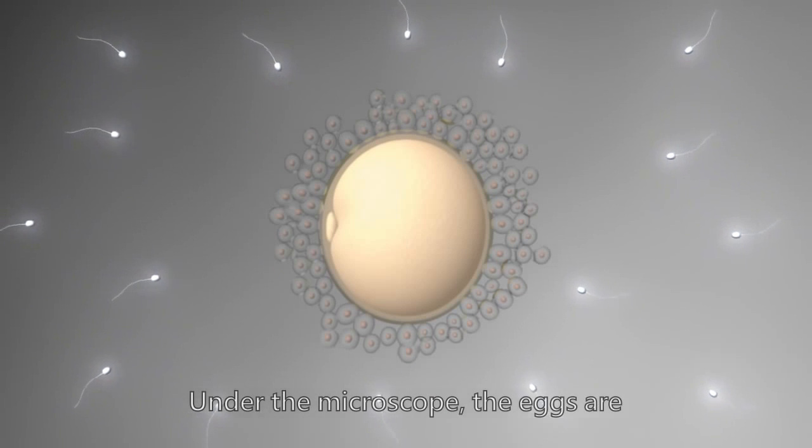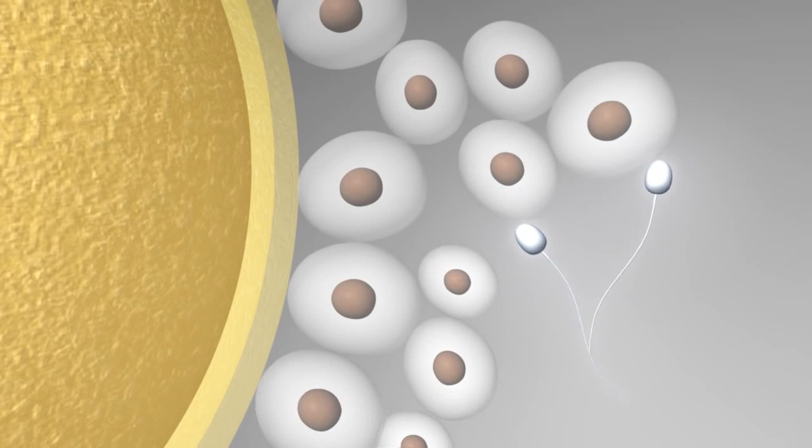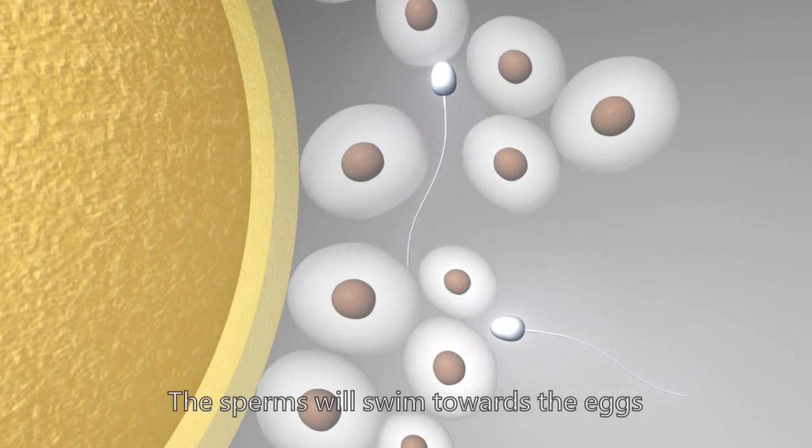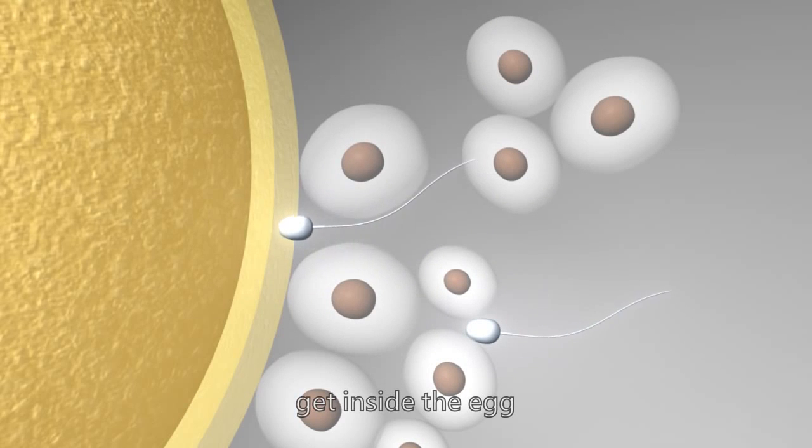Under the microscope, the eggs are surrounded by a bunch of actively swimming sperms. The sperms will swim towards the eggs, but only one of them will eventually be able to get inside the egg.